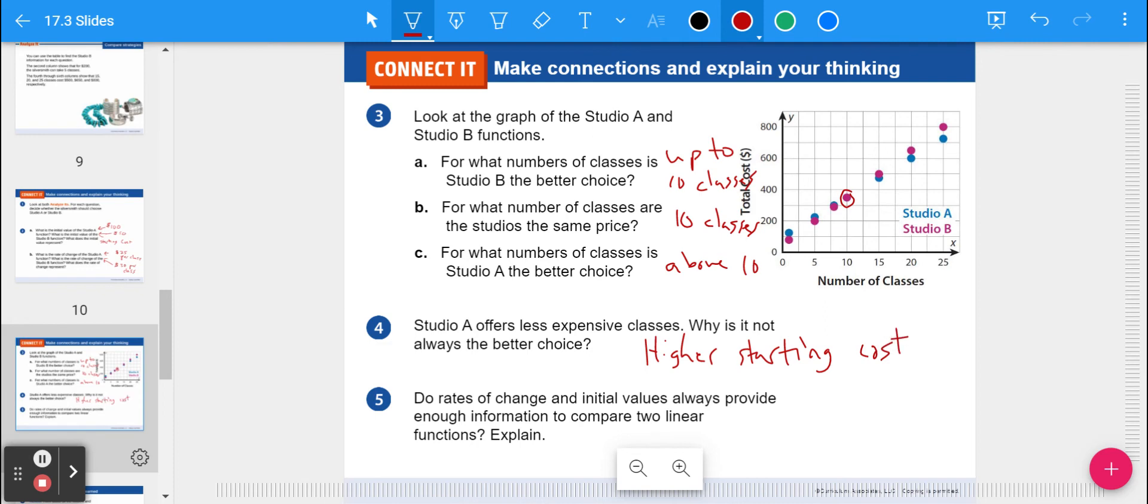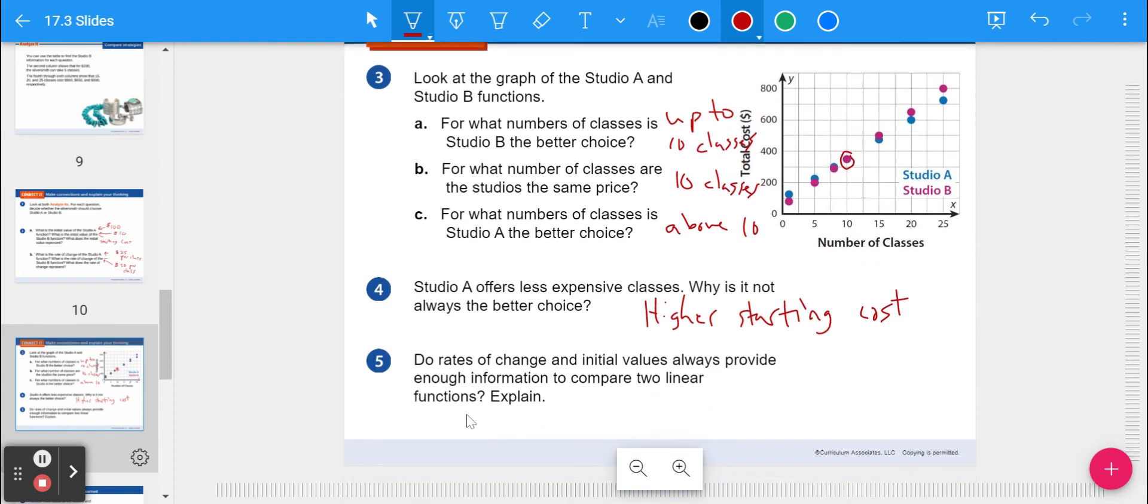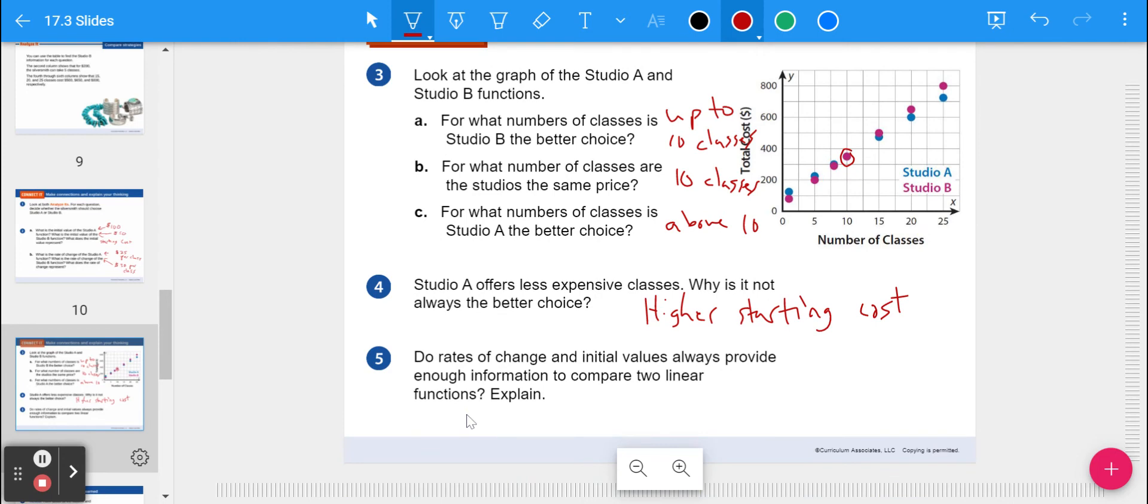Number five. Do rates of change and initial values always provide enough information to compare two linear functions? In a roundabout way, yes. But we want to look at, sometimes we want to look at specific spots in time that's not shown just from those two things. So yes and no is my answer. Yes. But sometimes you need more detail, like specific places in time.